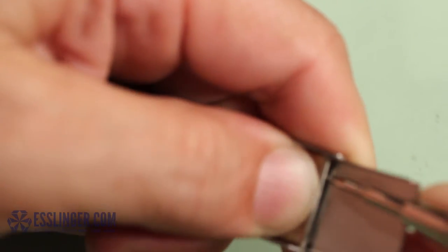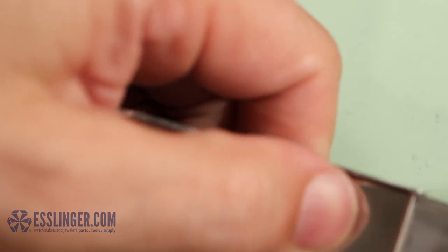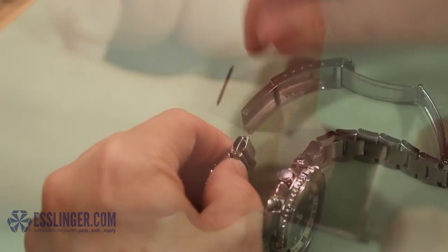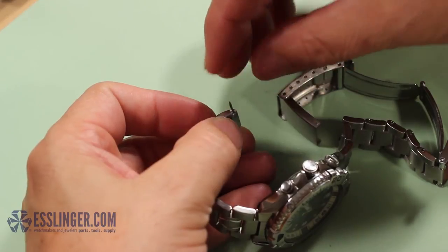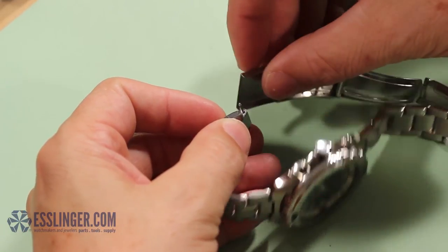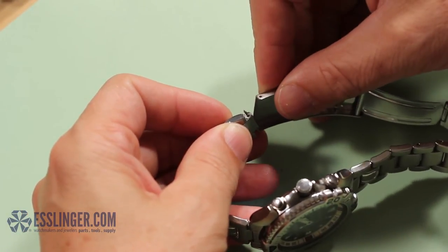Once the extender is attached to the clasp, you can reattach the clasp to the band. Start by fitting your remaining spring bar through the hole in the loose end of the watch band. This end of the watch band will sit inside the extender.